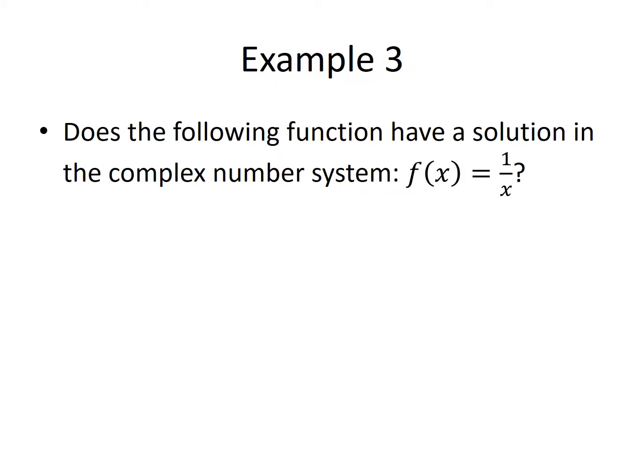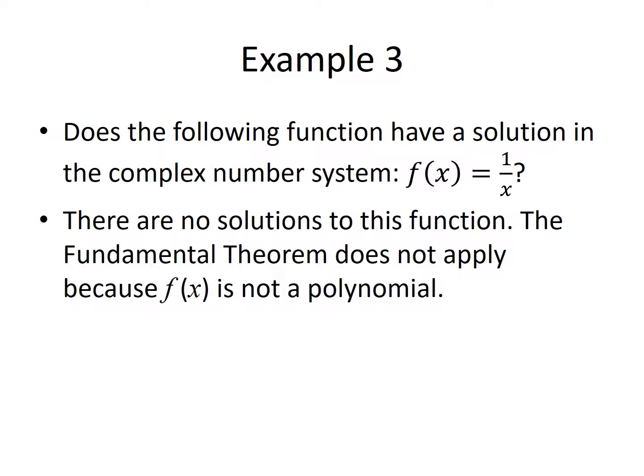Our third example asks: does the function 1 over x, the simplest rational function, have a solution in the complex number system? The answer is no. But again, the fundamental theorem of algebra does not apply because 1 over x is not a polynomial. The theorem specifically requires a polynomial of degree at least 1 to guarantee the existence of solutions. These two examples demonstrate that non-polynomial functions may or may not have solutions, and in either case, the fundamental theorem of algebra does not apply.